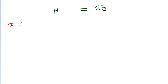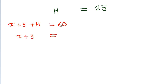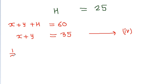So 3000 equals 120h, which gives h equals 25. From the first equation, x plus y equals 60 minus h equals 60 minus 25, which is 35. We call this equation 4. From the second equation, half times x times y equals 150, so xy equals 300, meaning y equals 300 divided by x.